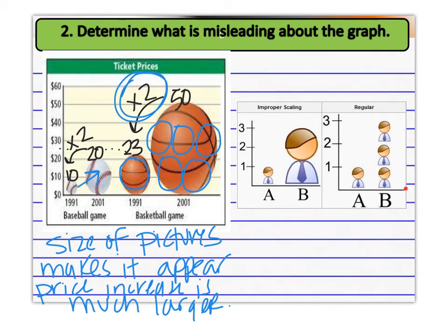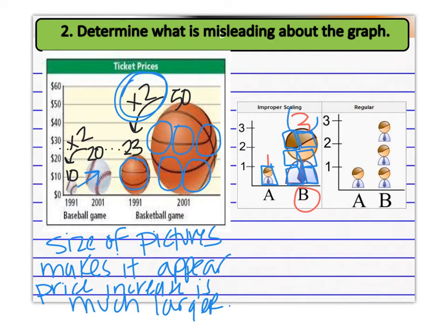Over here we have improper scaling versus regular scaling side by side. On the improper graph, A is one and B is three, so it went from one to three. But how many of those little A shapes could fit in the area of the bigger B? It looks like it multiplied by six, but it only multiplied by three. On the regular graph, you can clearly see A represents one and B simply tripled. The pictures chosen are misleading us to think that the change is much greater than it really is.